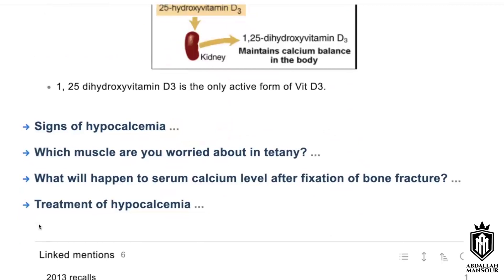What are the signs of hypocalcemia? Starting from the mouth: circumoral paresthesia. Also muscle cramps and tetany. Chvostek's sign, which is tapping on the facial nerve causing twitches of facial muscles. Also Trousseau's sign, which includes tetanic spasm of the hand on tapping on the median nerve when using a cuff.